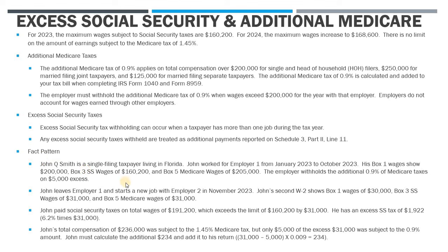Let's look at the fact pattern. We have John Smith — a single filing taxpayer living in Florida. He worked for employer number one from January through October 2023. His box one wages, the federal wages subject to federal income tax, show $200,000. Box three Social Security wages are $160,200, and the Medicare wages are $205,000. The employer withheld the additional 0.9% Medicare taxes on the $5,000 excess — Medicare wages of $205,000 exceeded the $200,000 threshold, so the employer withheld the additional 0.9% on that extra $5,000.